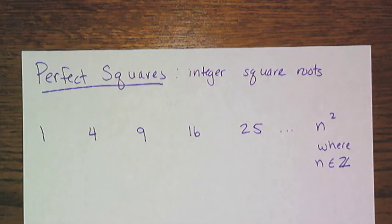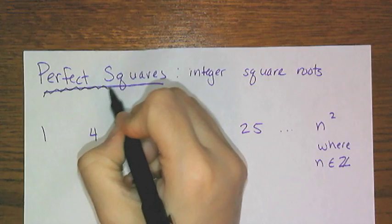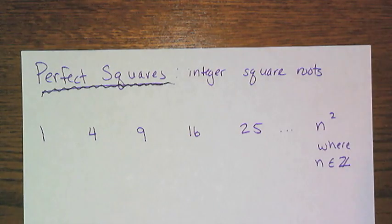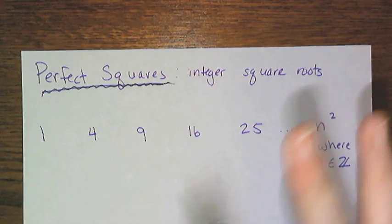One last thing is perfect squares. You're going to be dealing with perfect squares all throughout the year, and it is good to know a lot of them. If you can, make sure you know at least the first 12. If you know the first 25, that would be spectacular.